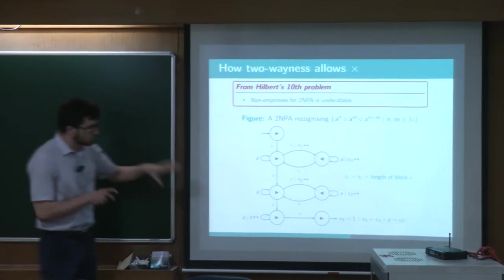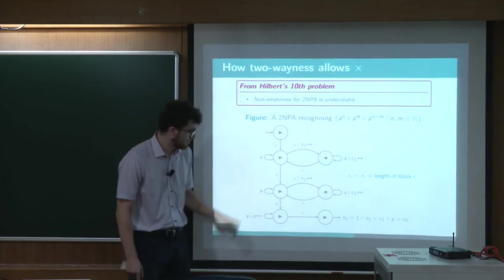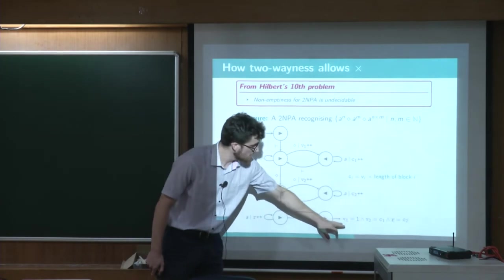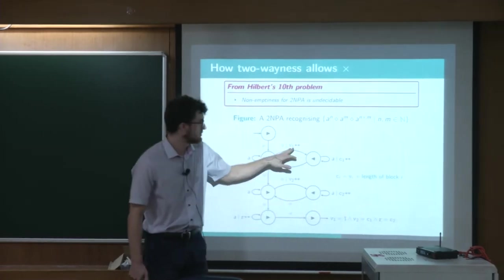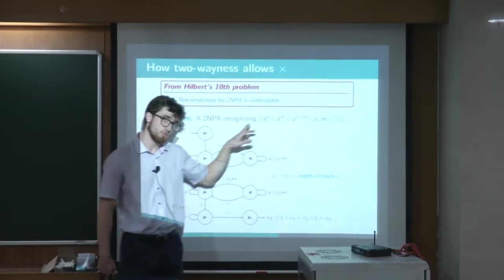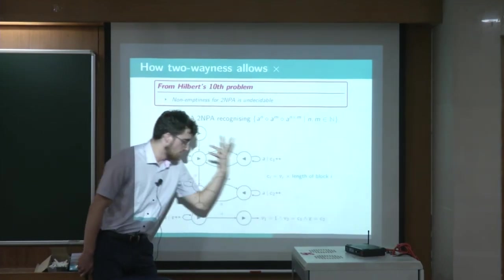So then the second block is treated in the same way, and the last one is just like, we just get the final length. And thanks to those acceptance conditions, we can force V1 to be 1. So then C1 will be equal to N, the length of the first block. V2 equals C1, so N as well.